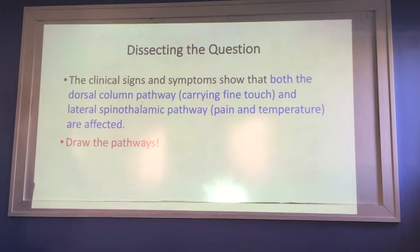These clinical signs and symptoms show that both the dorsal column pathway, which is carrying fine touch, and the lateral spinothalamic pathway, which carries pain and temperature, are affected in this patient. So we need to draw the pathways in order to localize where this is occurring.